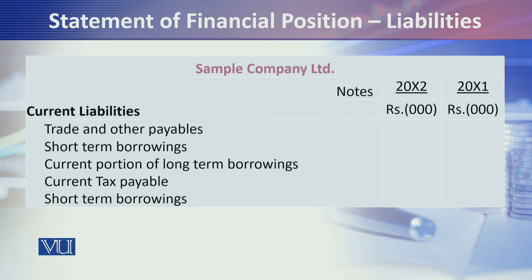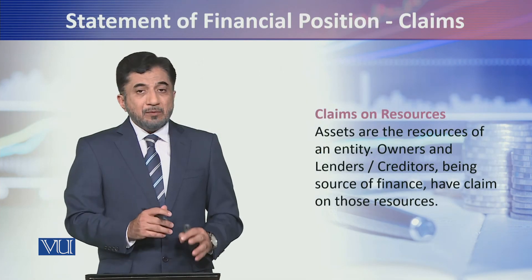Current liabilities are obviously those payable in the upcoming 12 months or within one normal operating cycle. These include trade payables, short-term borrowings, and the current portion of long-term borrowings — a very important point: from the long-term borrowings you have taken, the amount payable in the very next 12 months is presented in current liabilities as the current portion. Current tax payable is the tax you have to pay to the income tax department. Short-term borrowings are loans taken for a short period.